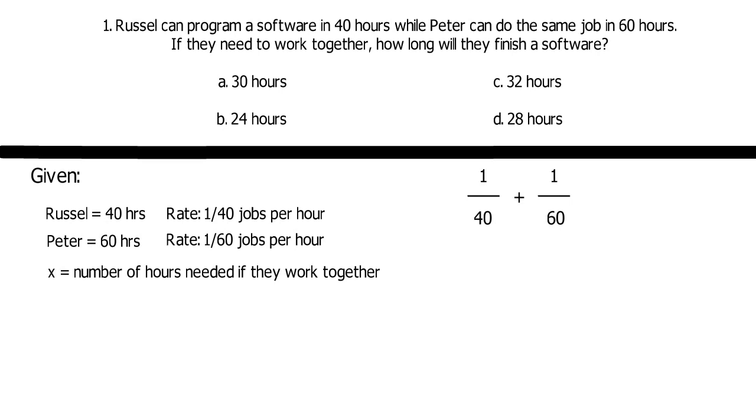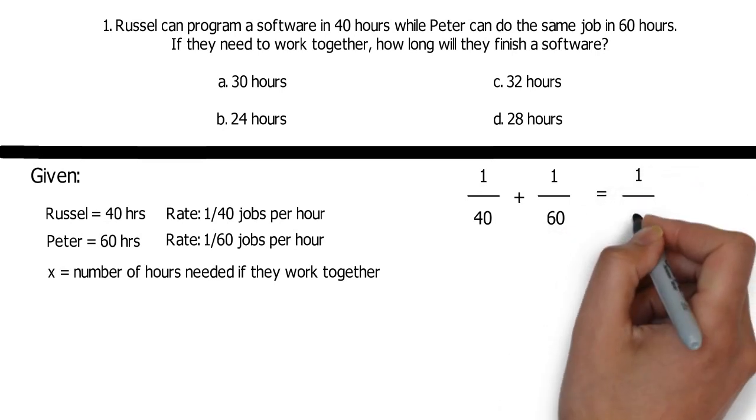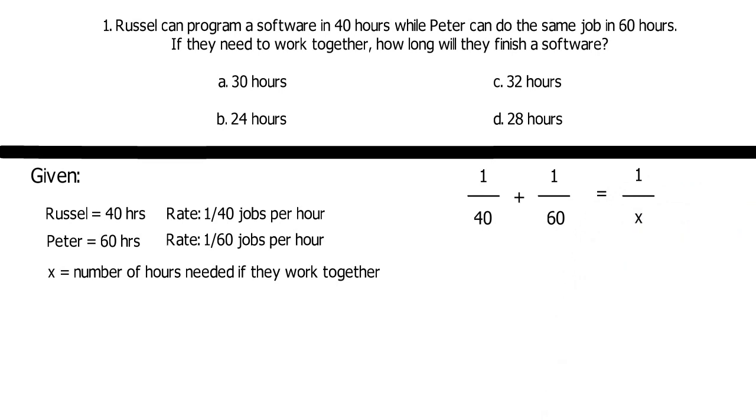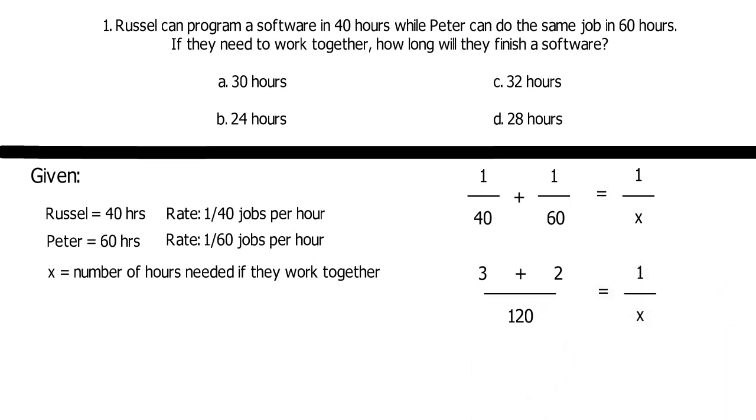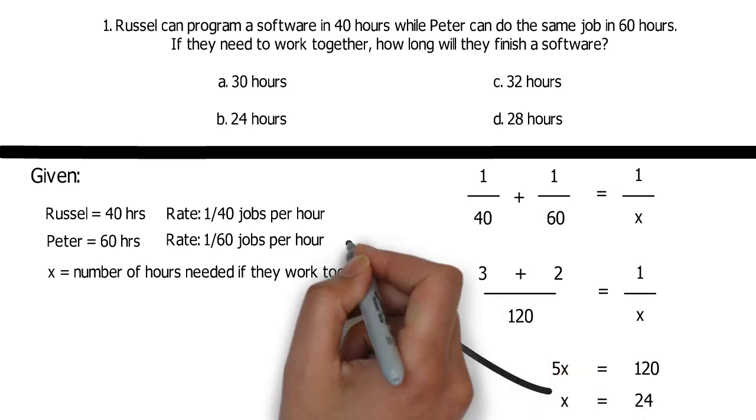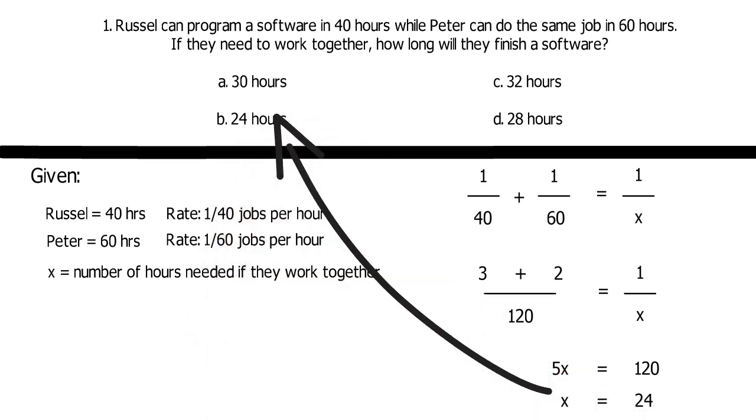We need to get the time it takes for one job to be done. And now, we have a complete equation. Let's just do the math by finding the LCM and a simple addition. A little cross multiplication here, divide both sides by 5, and now we can extract 24 hours. Therefore, Russell and Peter can do a job in 24 hours.